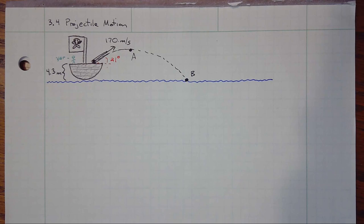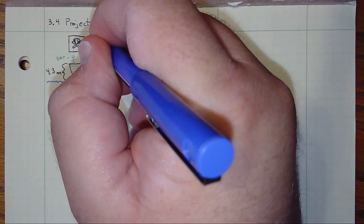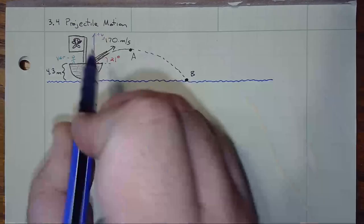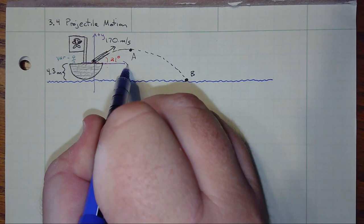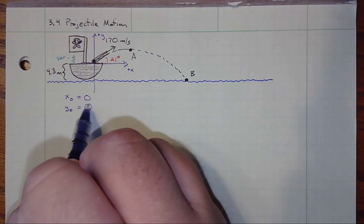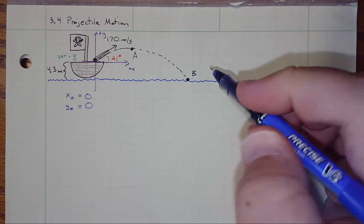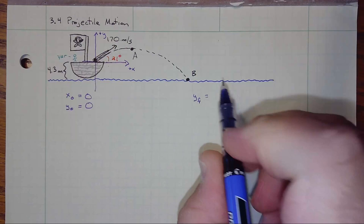We are also starting at some distance above the water. We can put the coordinate system wherever we like, so just to be fun, let's say I'm going to put my coordinate system such that my object starts off at the origin — meaning x₀ equals 0 and y₀ equals 0. That does mean that when it eventually comes down and hits the water, it's going to be below that level. In other words, my y_final is going to equal negative 4.3 meters.